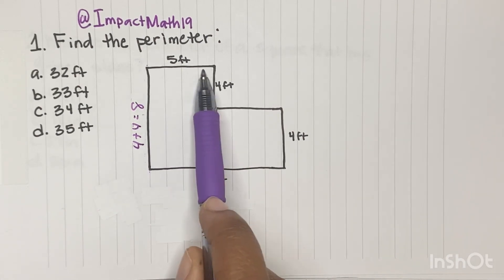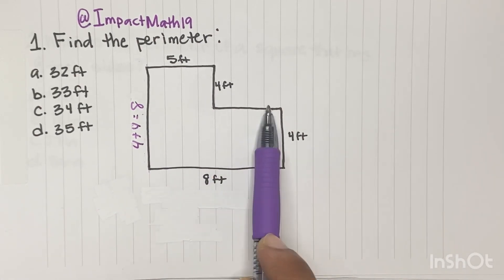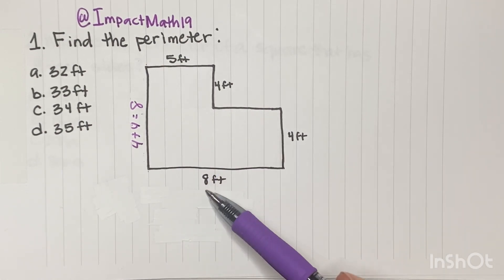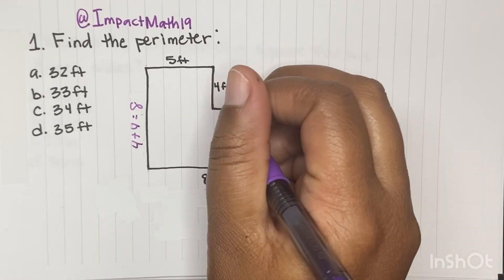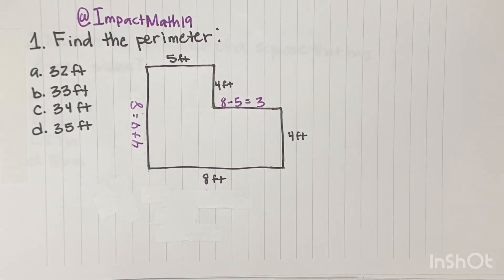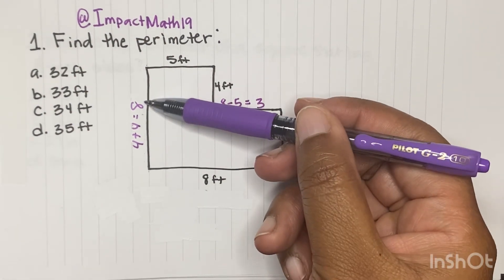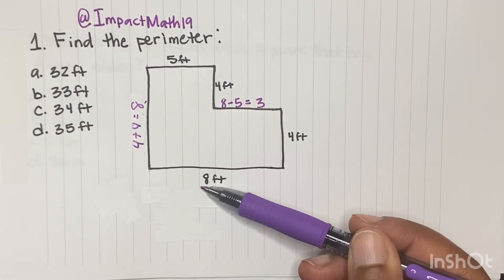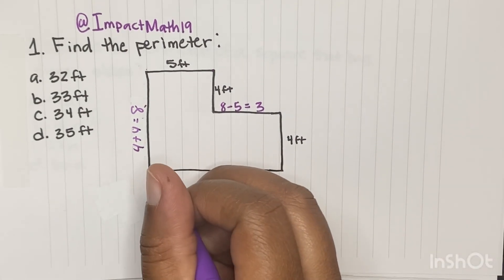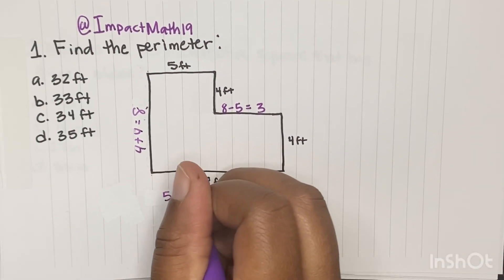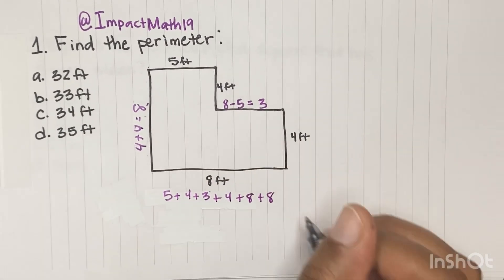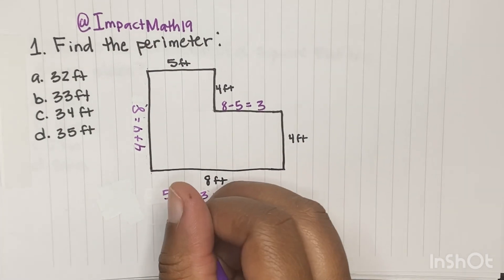Now don't forget, we have to find this missing piece right here. And how we get this missing piece is by doing 8 minus 5. So 8 minus 5 is going to give us 3. So now we have 8, 5, 4, 3, 4, and 8. And remember, perimeter is where you add up all the sides. So we're going to do 5 plus 4 plus 3 plus 4 plus 8 and plus 8.